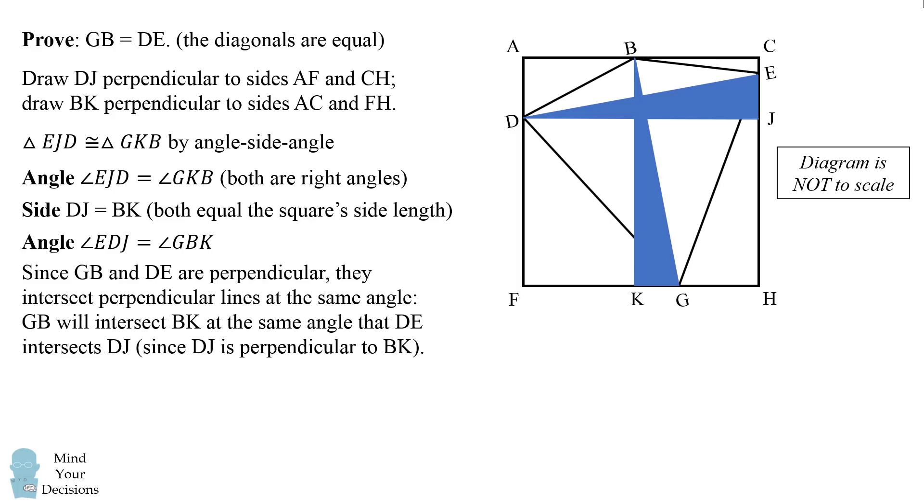What about the final angle? It's a little bit trickier. Angle EDJ is equal to angle GBK. The reason is because since GB and DE, the diagonals of the kite, are perpendicular, they intersect perpendicular lines at the same angle. GB will intersect BK at the same angle that DE intersects DJ because DJ is perpendicular to BK. Now we can use the fact that the two triangles are congruent to say that their hypotenuses GB and DE will be equal to each other.